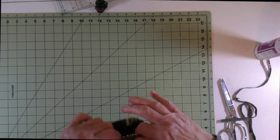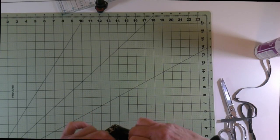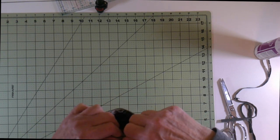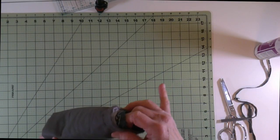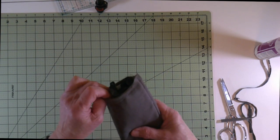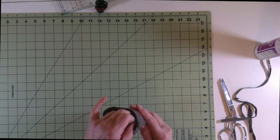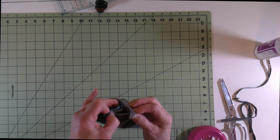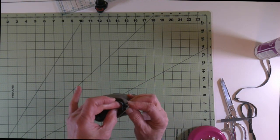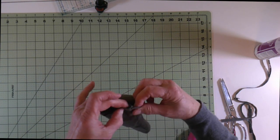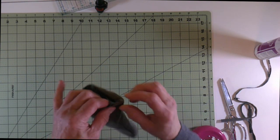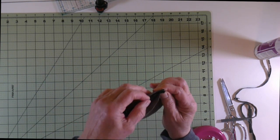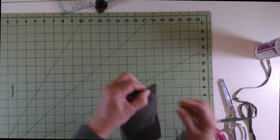And just smooth that around that top edge so that the seam is right on the edge. And then come down to the bottom and we're going to match up the seam right here. And just flip that seam allowance, one of them in one direction and one in the other direction. And we're going to pin this all the way across.